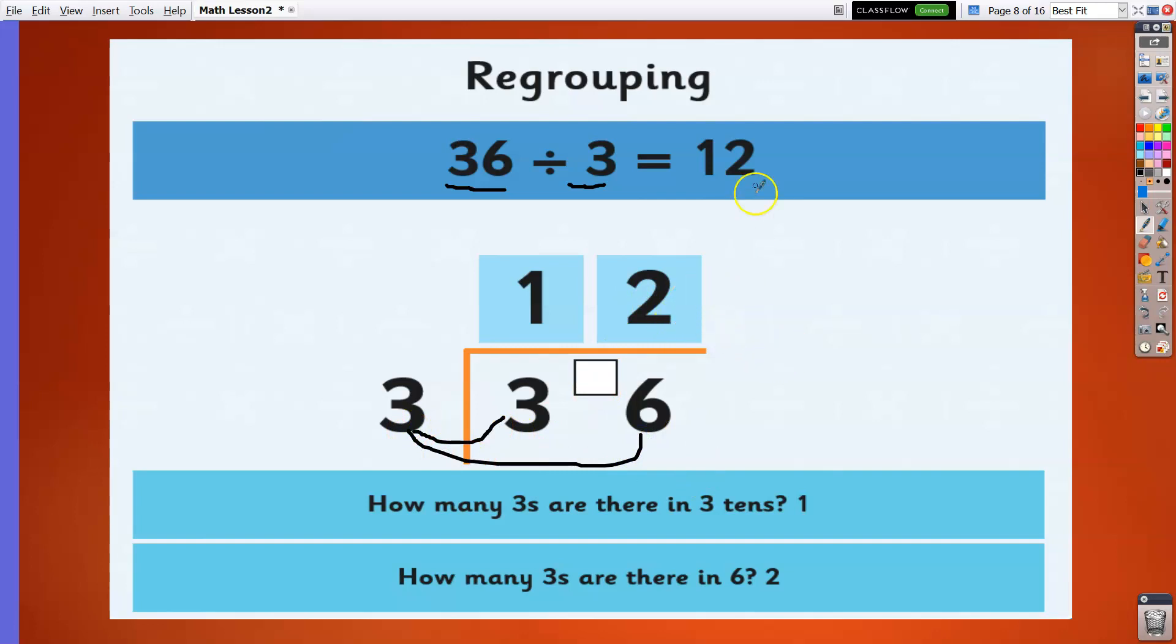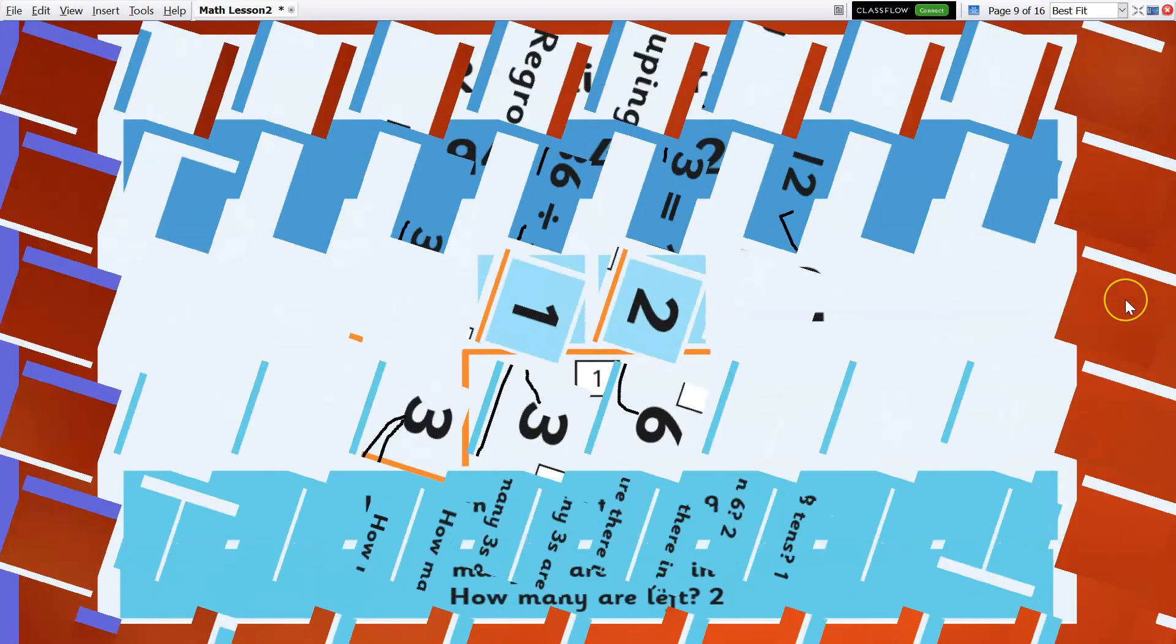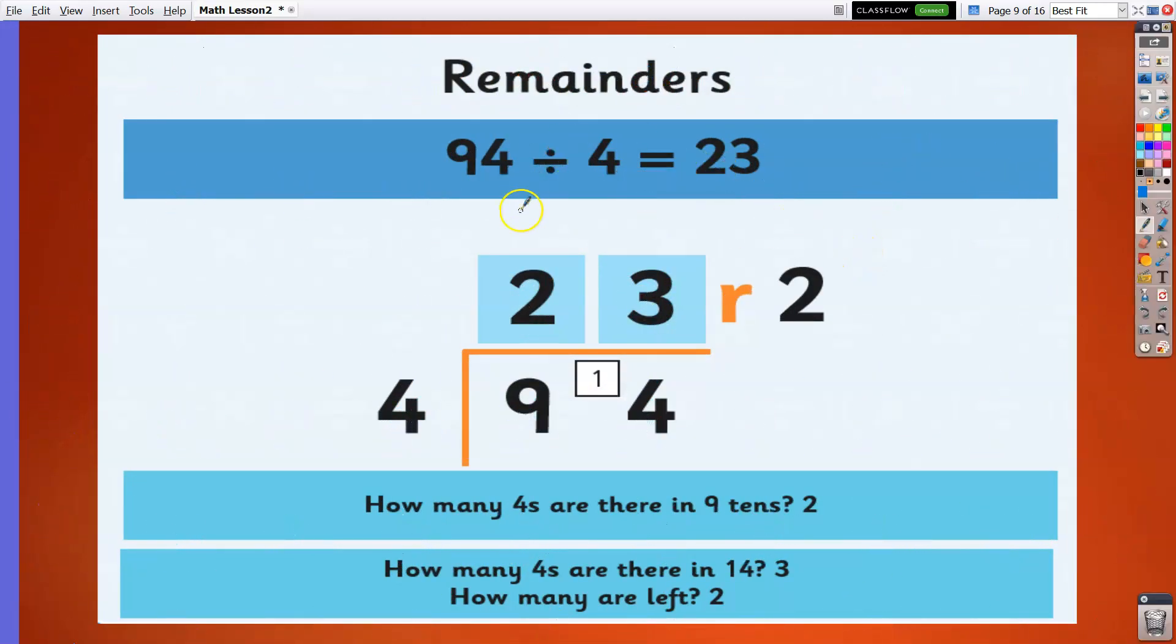Same thing happens with 94 divided by 4. 9 divided by 4 is 2, that is already on the top. So we have remainder 1 because 2 times 4 is 8 only, so there's extra 1 to make it 9. So we put it in between, now we get 14. 14 divided by 4 is 3 and there's remainder 2. We just write it on the top because we don't have any digit to divide anymore.